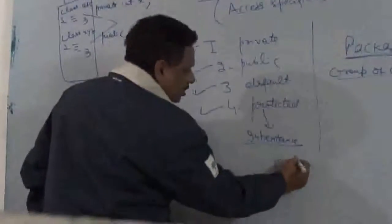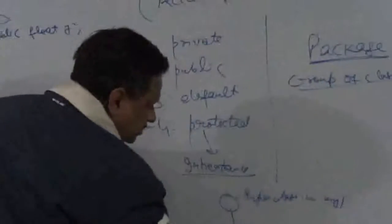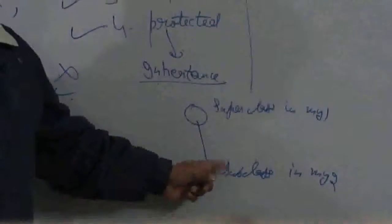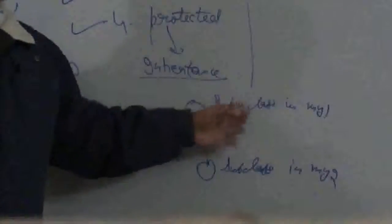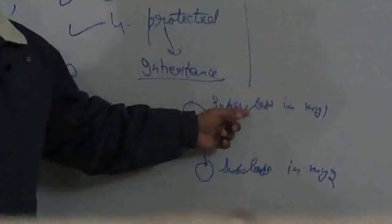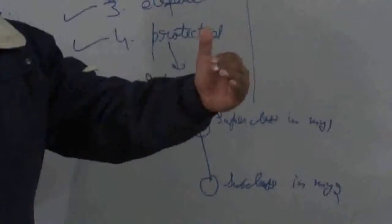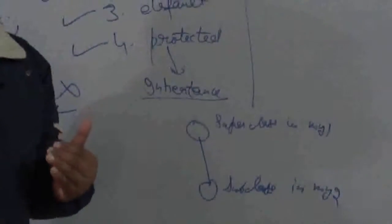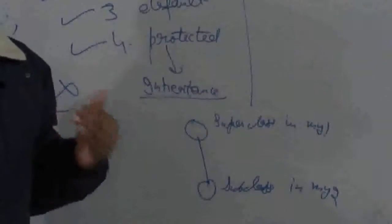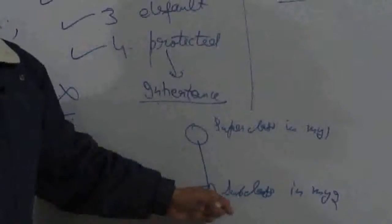Suppose we have a superclass in package my1 and a subclass in package my2. We would be able to access the members of the superclass in the subclass only if those members are either public or protected. However, public would also give access to non-subclasses belonging to other packages, which goes against the principle of data hiding. So if there is a requirement to access members of a superclass from a different package, we should use protected. Protected members of the superclass will be accessible to subclasses belonging to other packages.